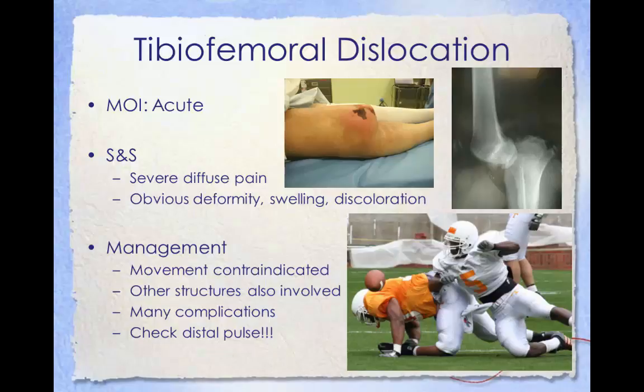Other structures commonly injured include the popliteal artery, particularly in anterior dislocations, and the peroneal and tibial nerves. Undiagnosed arterial injury has a high risk of ischemic complications which may lead to amputation. Dislocation causes deformity that is clinically obvious; however, some dislocations spontaneously reduce before medical evaluation, leaving the knee very swollen and grossly unstable. Fullness in the popliteal fossa suggests hematoma or popliteal artery injury. Management includes stabilizing the patient, as movement is contraindicated. Check the distal pulse and refer the patient immediately.